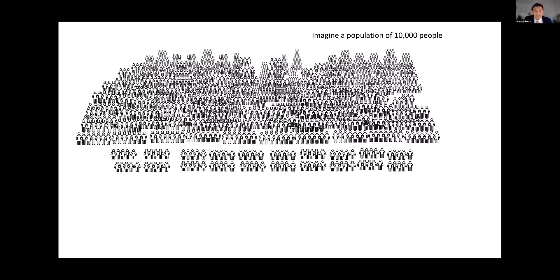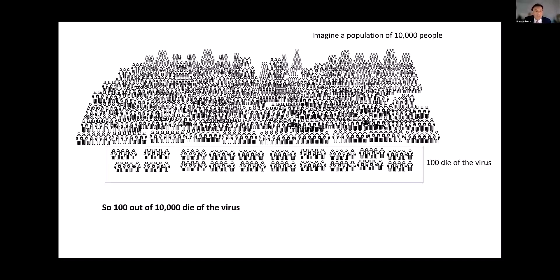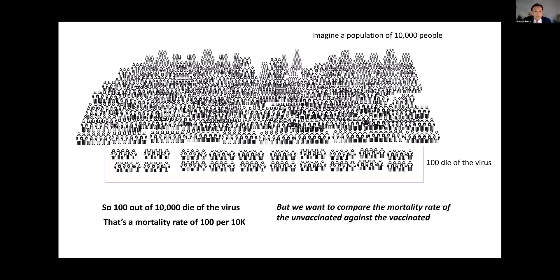To see why, imagine a population of 10,000 people of whom we know that 100 die of the virus — a mortality rate of 100 per 10k. We want to compare the mortality rate of the unvaccinated against the vaccinated.